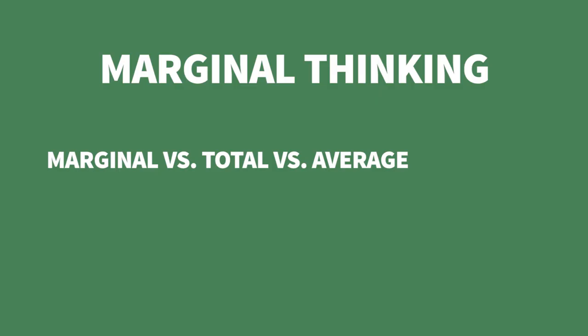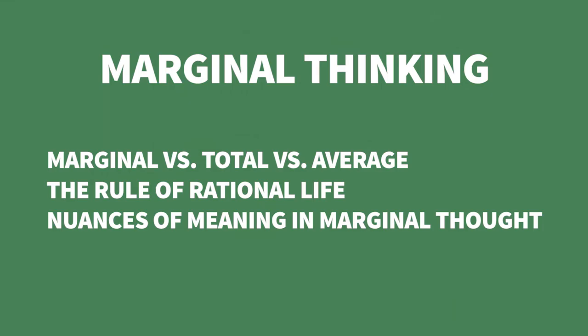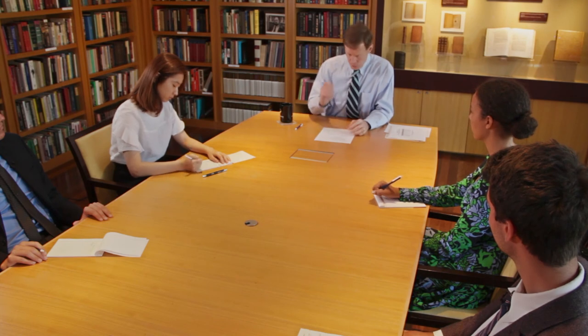This is the third lecture on basic concepts of economics. The main topics for this lecture are the meaning of marginal, thinking at the margin. We're going to distinguish marginal from total and marginal from average. Then I'll briefly tell you about the rule of rational life, a nice way of thinking at the margin, and at the end I'll talk about some of the nuances of the meaning of margin.